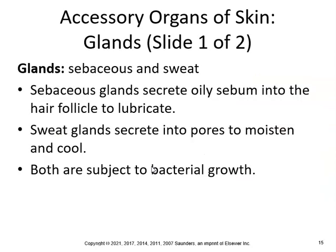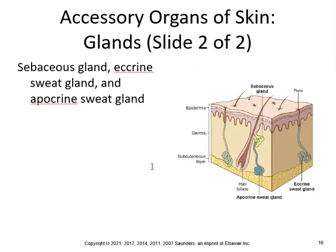Now, glands — sebaceous and sweat. Sebaceous glands secrete oily sebum into the hair follicle to lubricate — make sure you know how to spell sebaceous. Sweat glands secrete into pores to moisten and cool. Both are subject to bacterial growth and hence the smell. Types include sebaceous glands, eccrine sweat glands, and apocrine sweat glands.